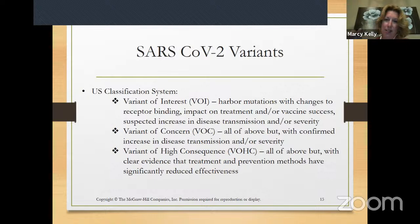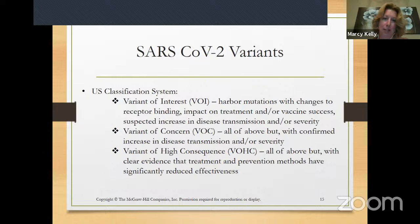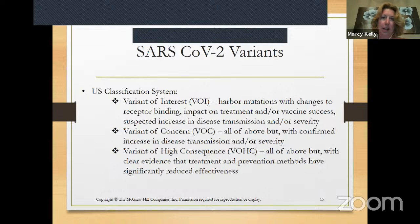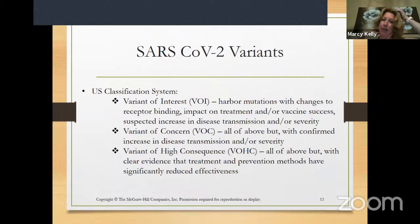A variant of concern — VOC — and all of the variants we're seeing right now have been labeled VOCs, with an absolute confirmed increase in disease transmission and/or severity. We're seeing that with Delta. What we don't want to happen is for Delta to turn into a variant of high consequence, or VOHC, which means treatment and prevention methods have significantly reduced effectiveness. Right now we're on the cusp of that possibly happening, but we're not looking at Delta evolving further into that last category.